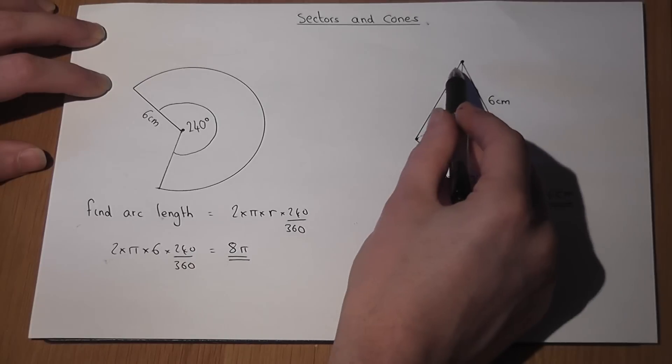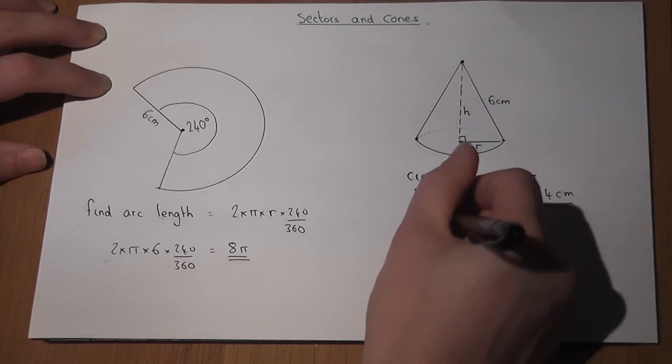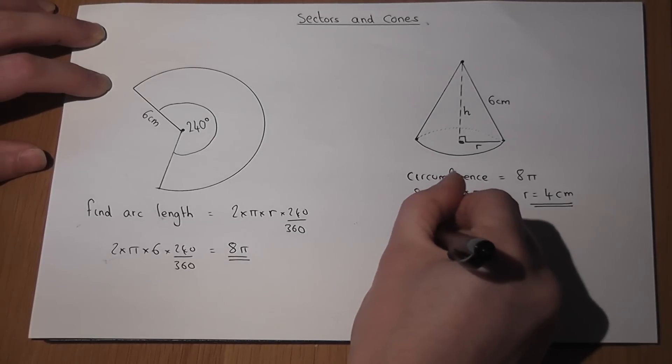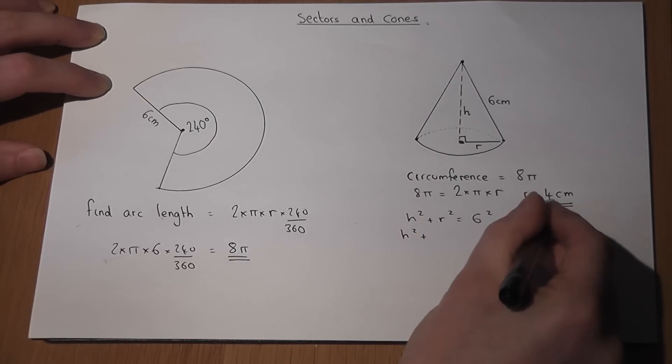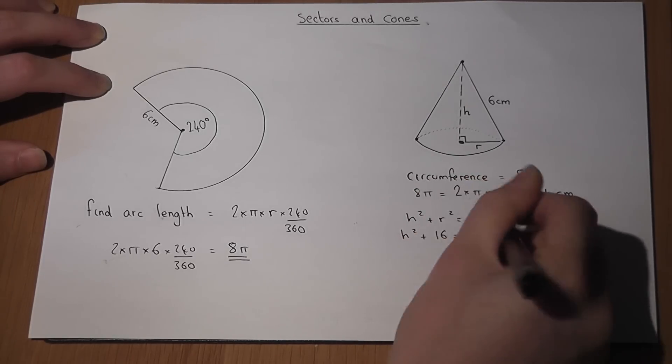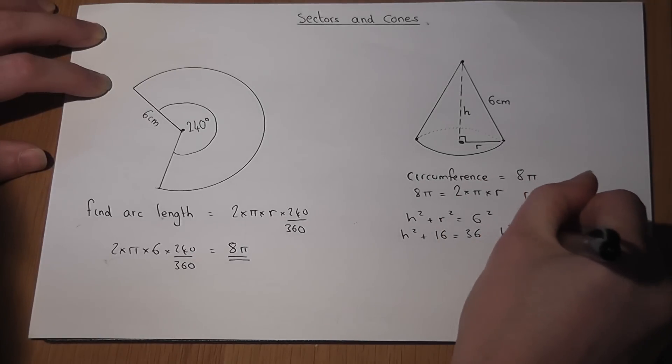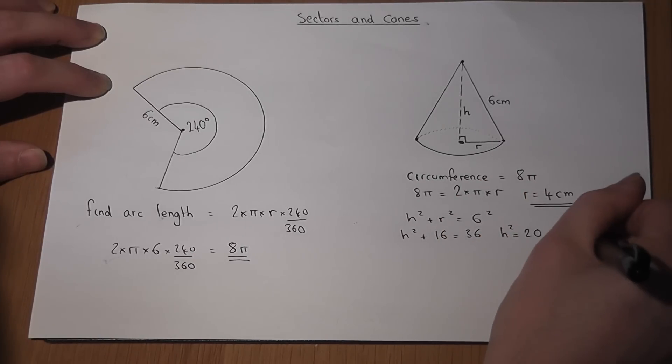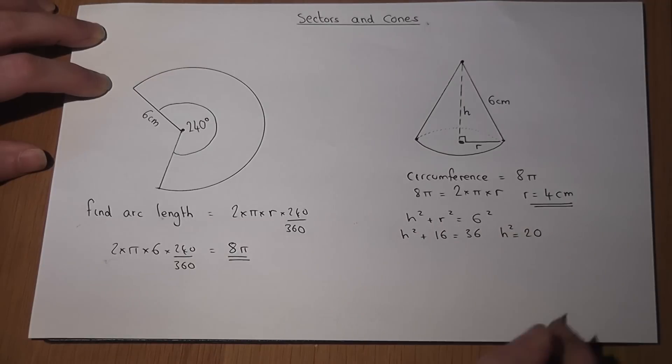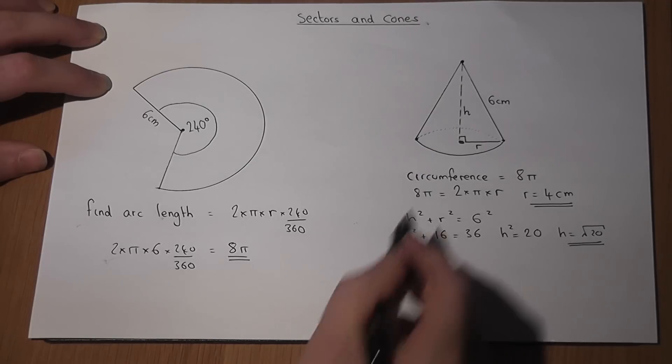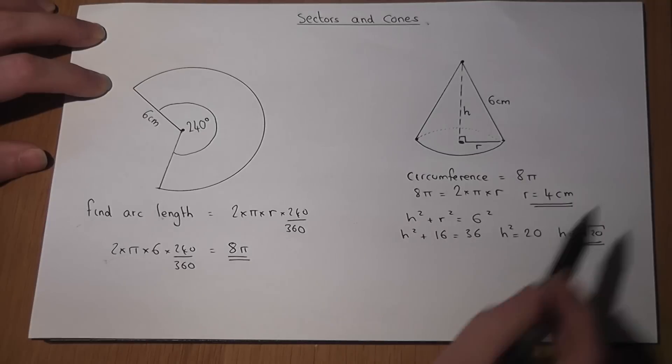So to find h, I can use Pythagoras. h squared plus r squared must equal 6 squared. r squared equals 16, and 6 squared is 36. So h squared equals 20, which means h equals root of 20. So I now know the height of the cone and the radius.